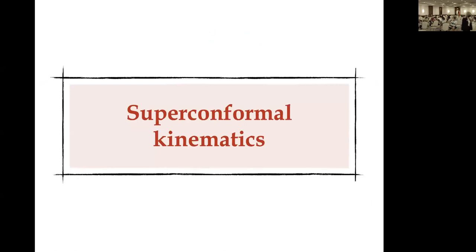A question was raised: in the four-point function of single-trace operators in N=4, conformal block decompositions involve both single-trace and double-trace operators. Here there is no analog of that distinction — all operators appear on the same footing. Because we are taking infinite N from the start and working with a semi-classical string in AdS, there is no notion of single, double, or triple trace.